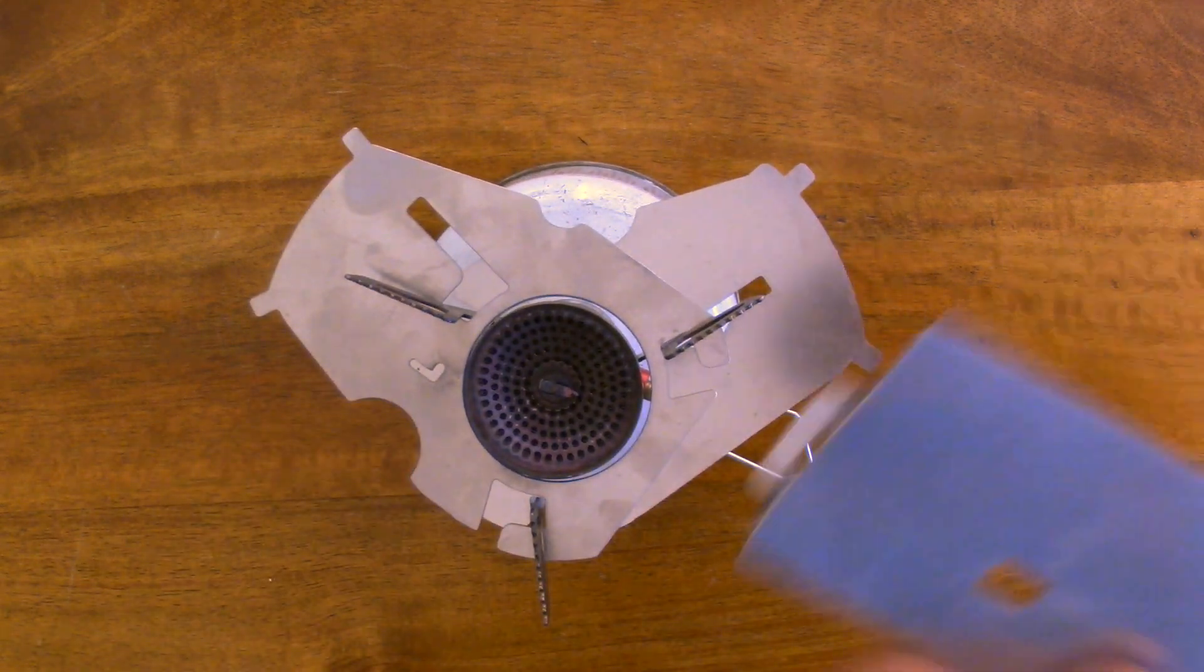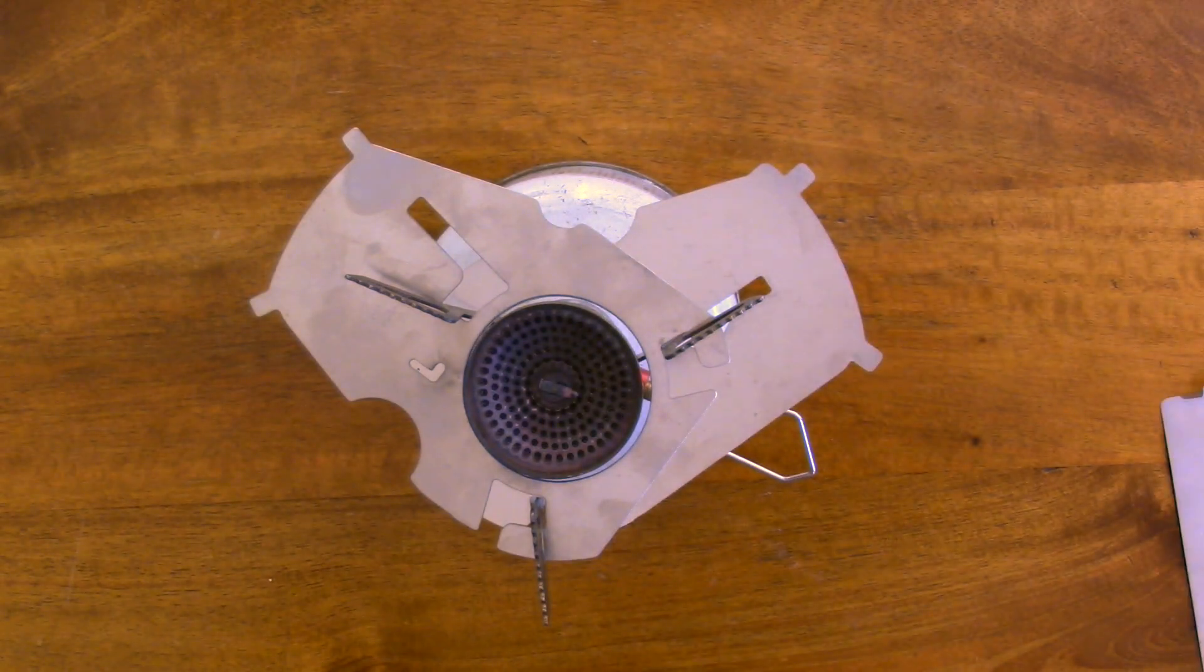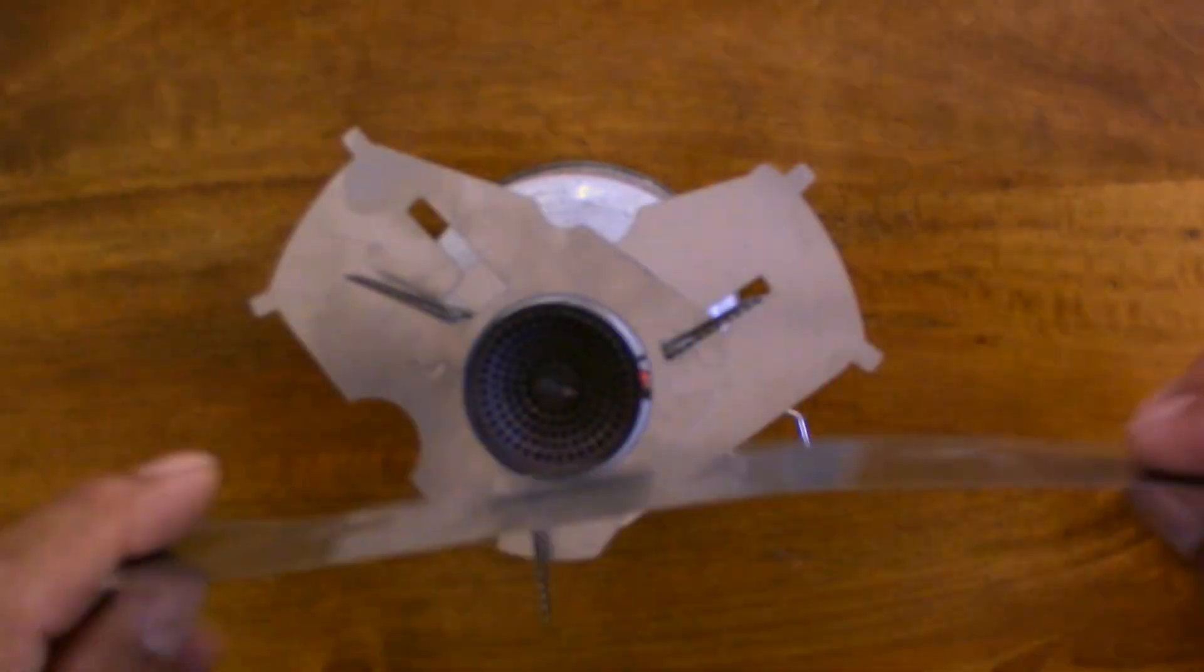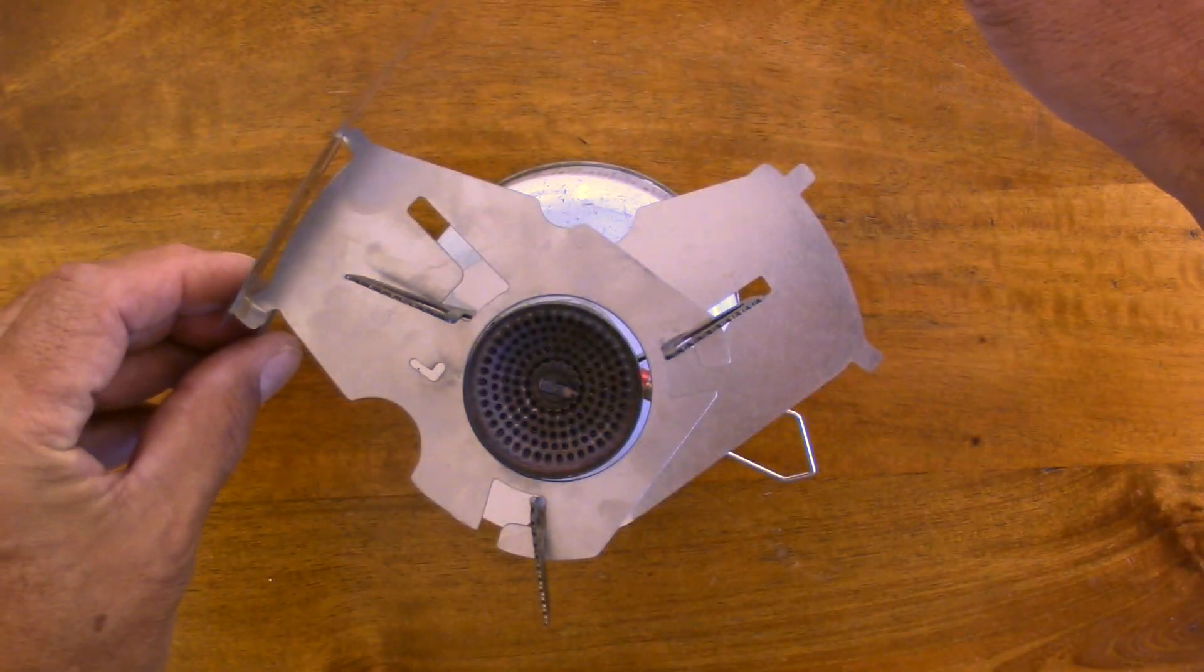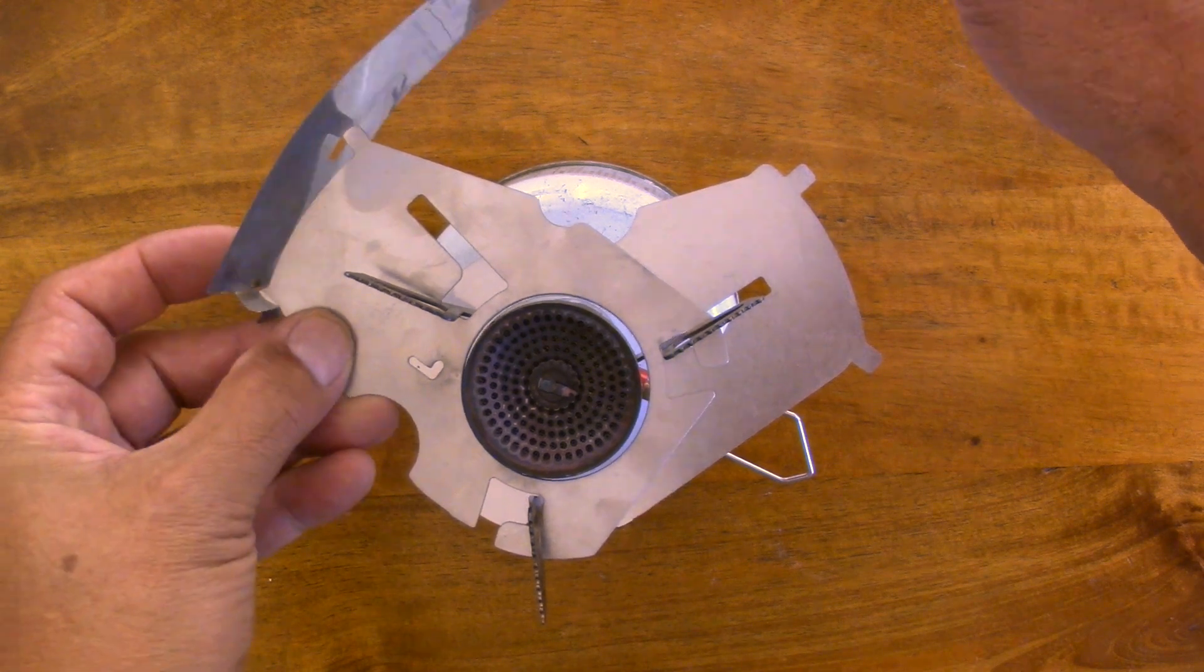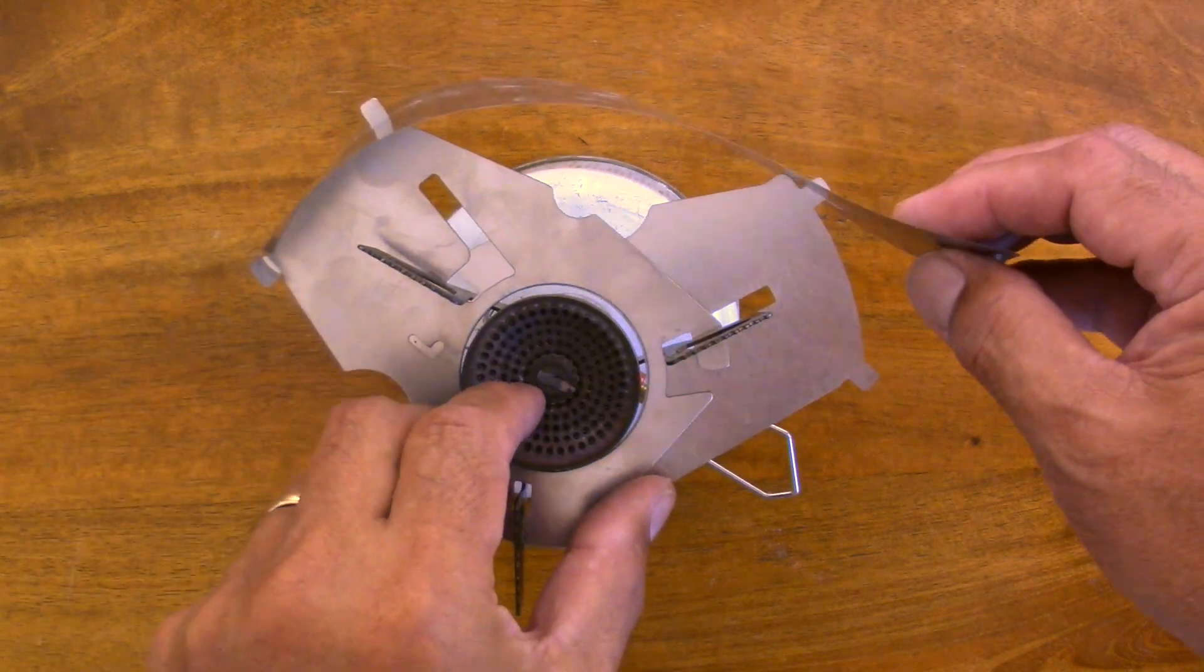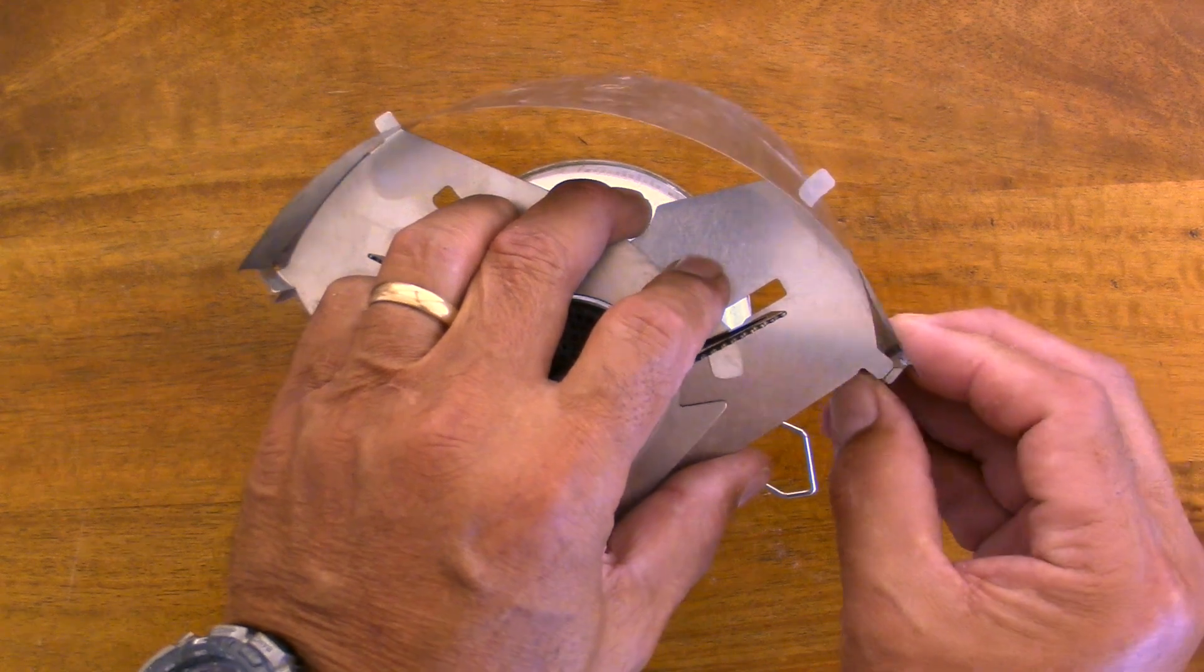Next you take the windscreen and the G should be facing forward. You hook it over the far tab, next tab, and then finally the last tab.